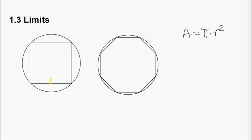Archimedes actually used this concept of limits. So you have the circle for which you want to determine the area — you don't know it — and you know it's very simple to calculate the area of a polygon. Start with something simple like a square. If we inscribe this square inside the circle, you see it's covering a great part of the circle, but obviously not entirely.